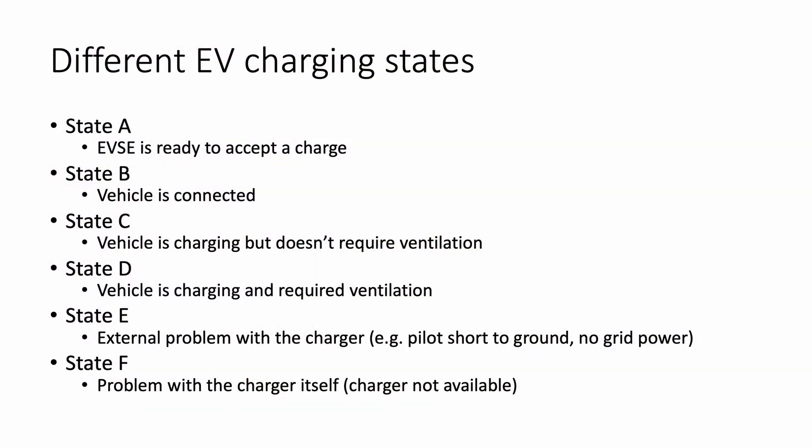The charger itself can have about six different states, labeled A to F. State A means the device is ready to charge. When we plug in the cable, the device detects it is connected to a car and switches to state B. When the car is charging it will be either state C or state D — D requires ventilation of the charging area, C does not. States E and F indicate errors: E is an external error, and F is a fault in the device itself.